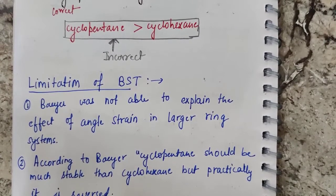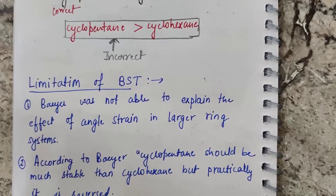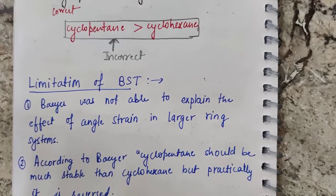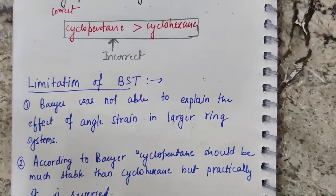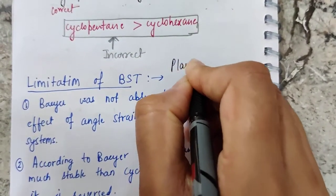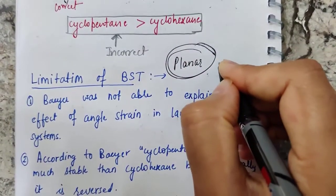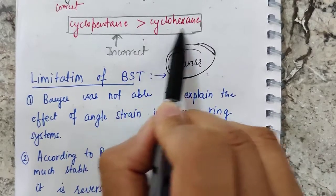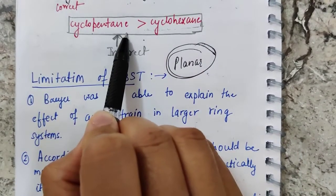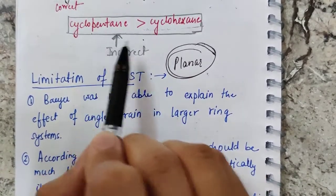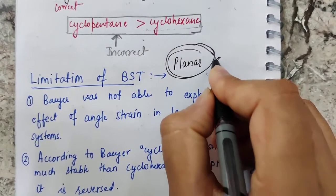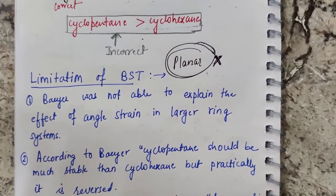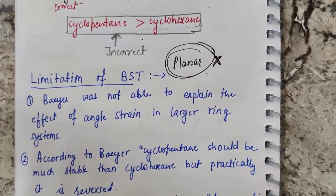Moving on to the limitations of Baeyer's strain theory: the very first assumption was that all cycloalkanes are planar. This assumption resulted in a wrong explanation, because Baeyer assumed that cyclohexane as well as cyclopentane are planar compounds, and on that basis explained the order of stability. But this assumption in itself was incorrect.